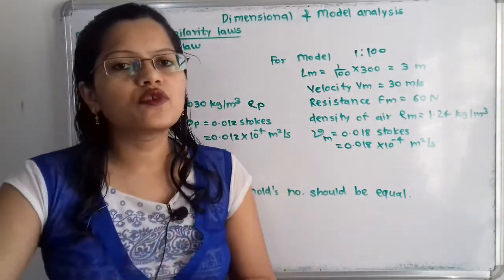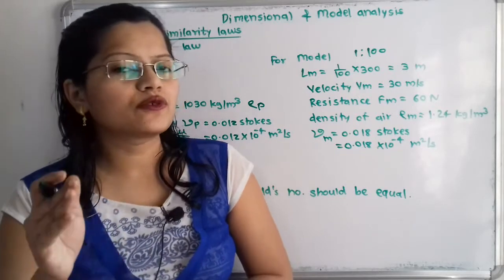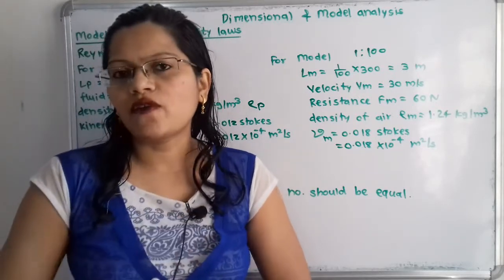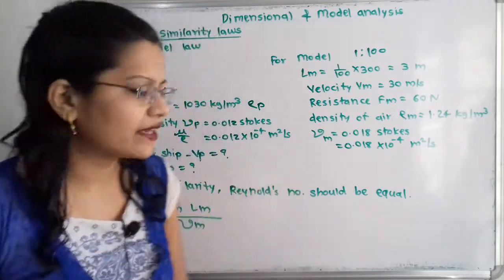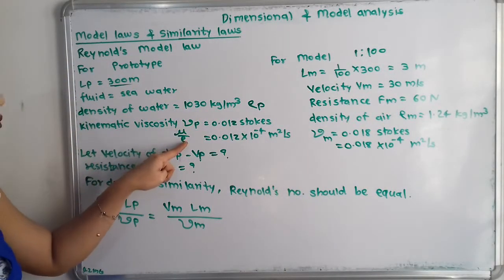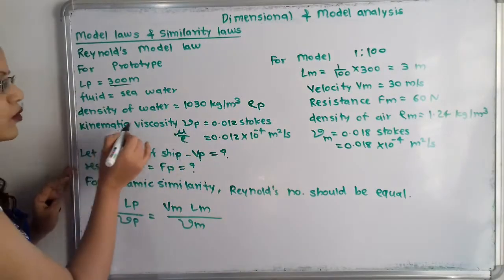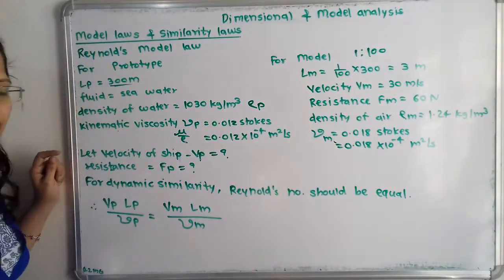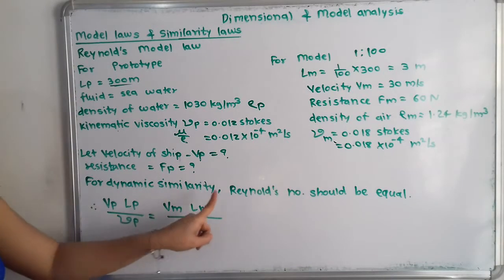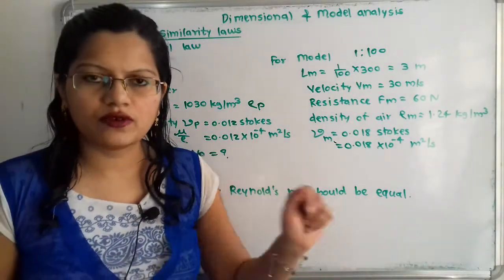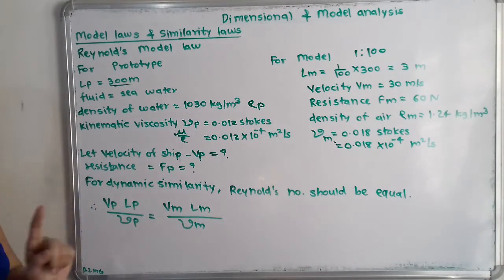Since the ship is moving, we apply dynamic similarity using the Reynolds model law. The formula is given in terms of μ and ρ, but since kinematic viscosity ν is given directly, we use it. For dynamic similarity, the Reynolds number must be the same: Vp·Lp / νp = Vm·Lm / νm.